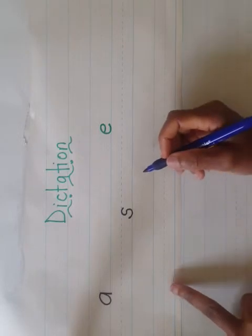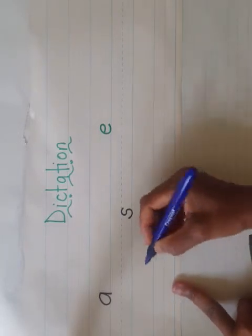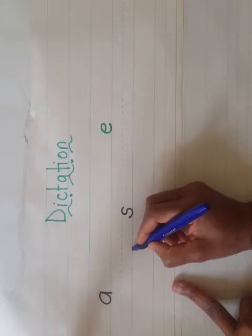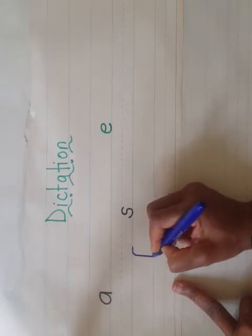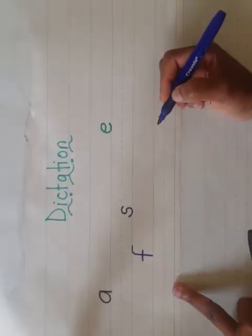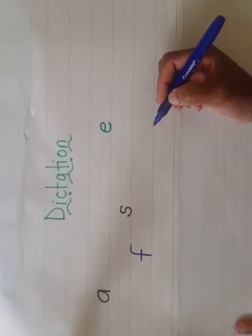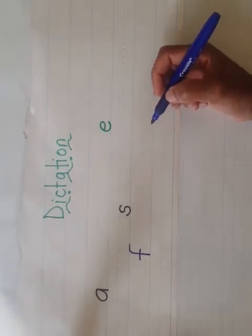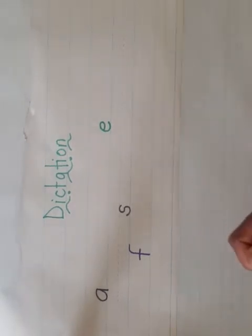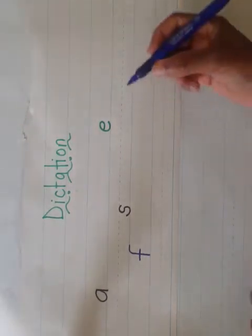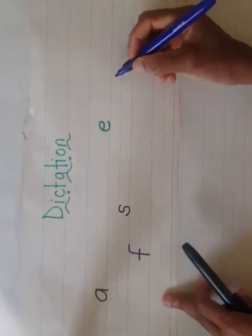What letter says 'f' — as in fan? F as in fan. F says 'f' as in fan. So we start at the top, go back, come straight down, and across. And that is F. What letter makes the 'mmm' sound, as in man?